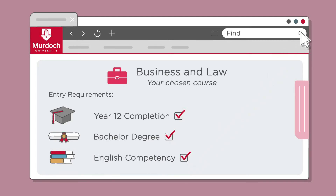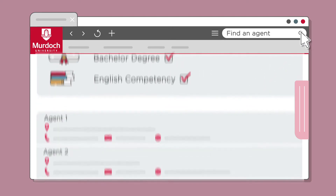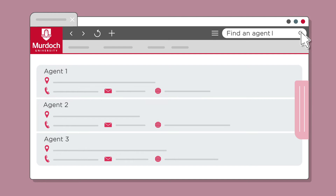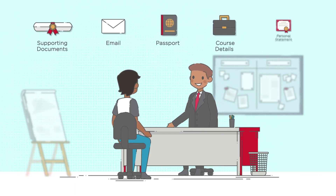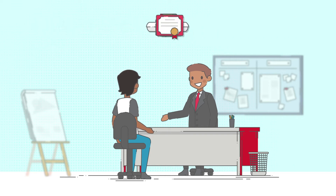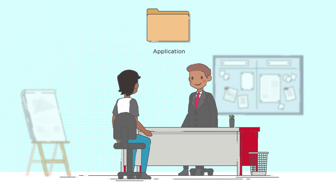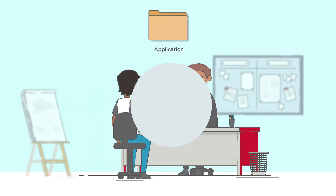Step 3. Apply through one of Murdoch's registered international agents, who you can find on our website. There are many benefits of applying through an agent. An agent can help guide you through the application process in your first language, and they know exactly what documentation you need to provide, in addition to assisting with your student visa application.